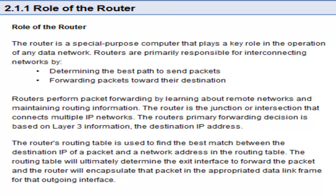The role of a router: the router is a special-purpose computer that plays a key role in the operation of any data network. Routers are primarily responsible for interconnecting networks by determining the best path to send packets and forwarding packets towards their destination. Routers perform packet forwarding by learning about remote networks and maintaining routing information. The router is a junction or intersection that connects multiple IP networks. The router's primary forwarding decision is based on Layer 3 information — the destination IP address.